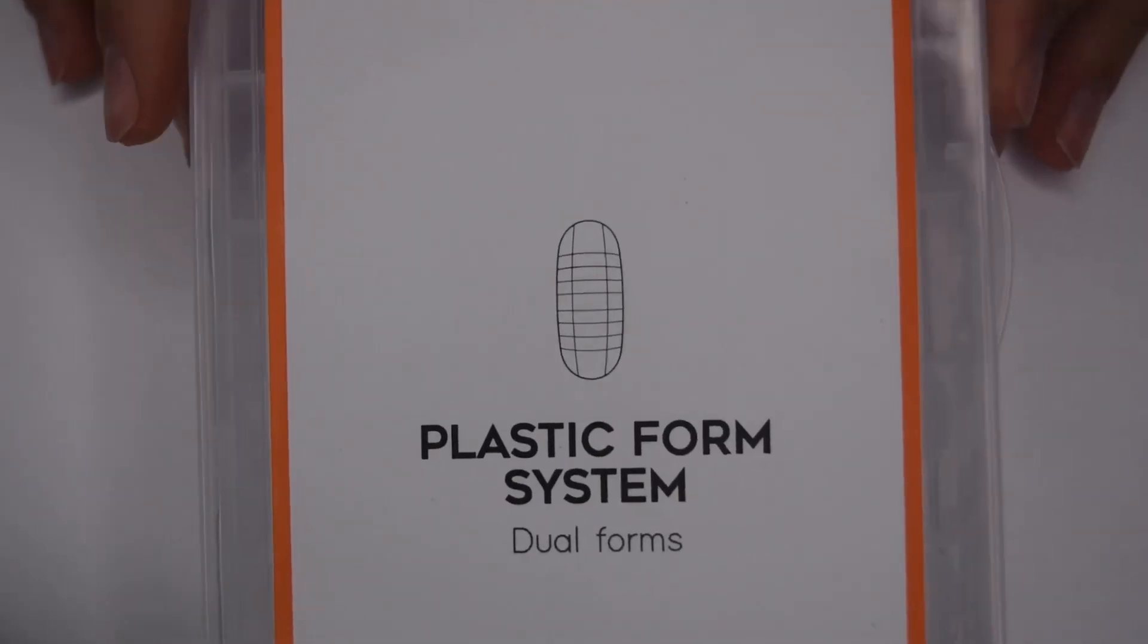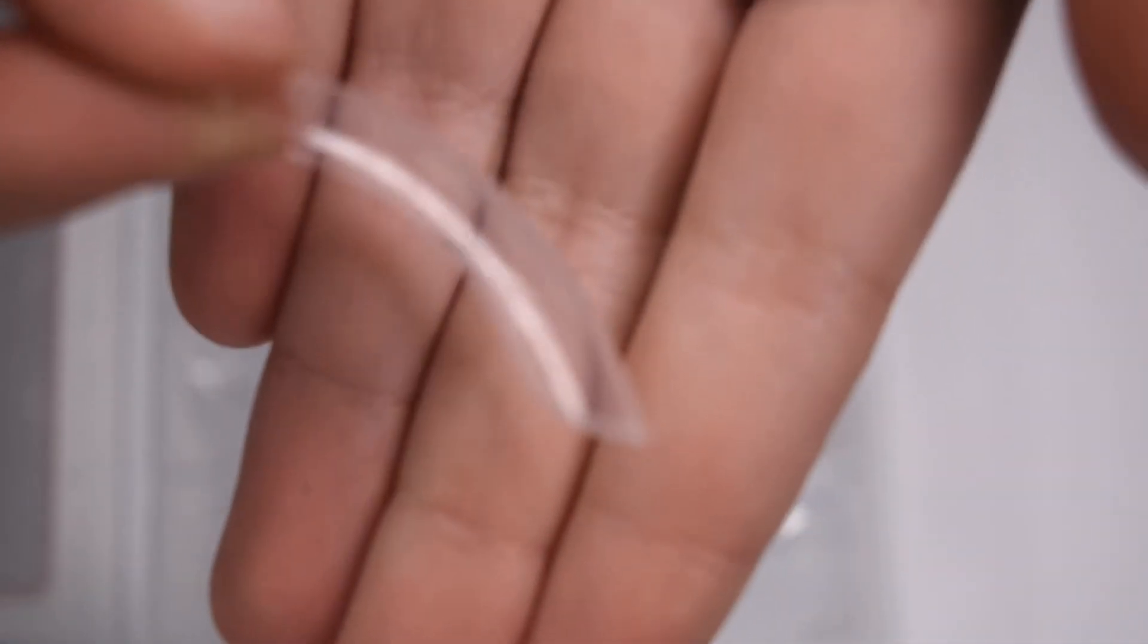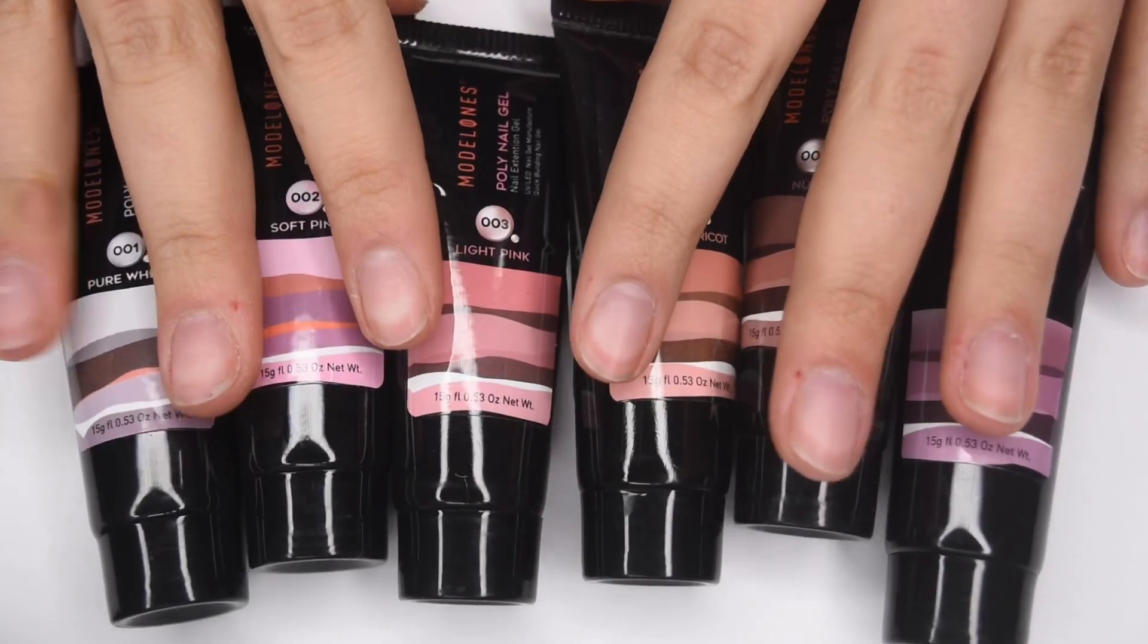So first I thought I would start off by showing you guys the dual forms. And as you can see here, they come in quite a few different sizes. And as you can see on this dual form, the curve is pretty strong, so that is something to note with this kit.